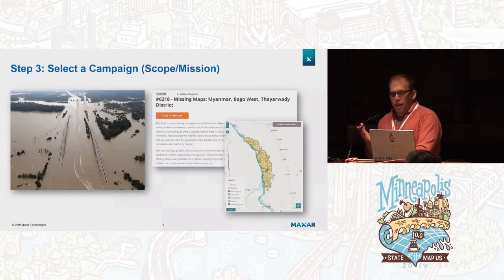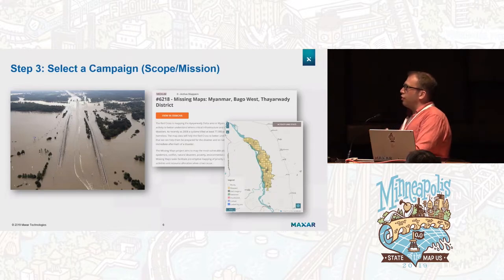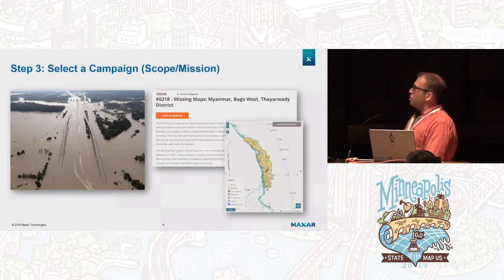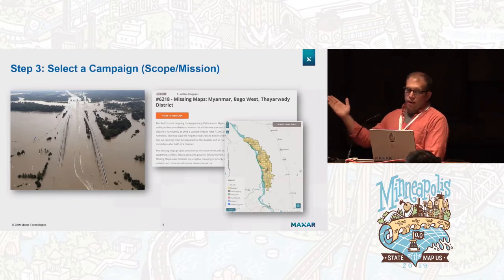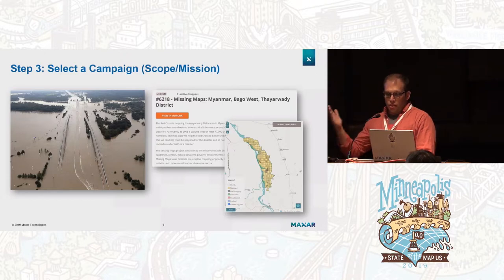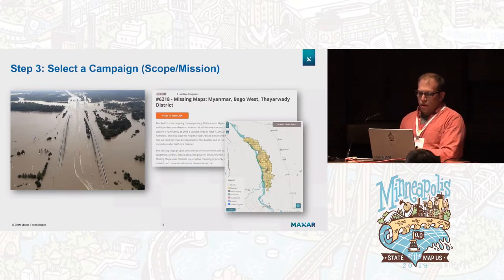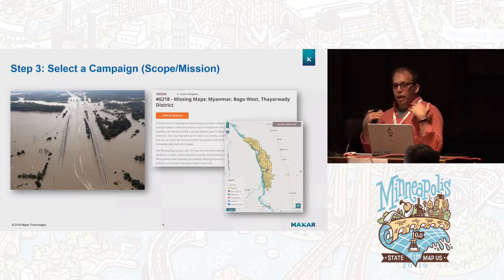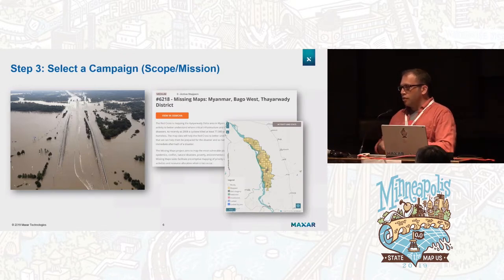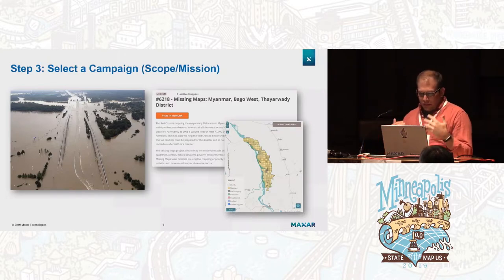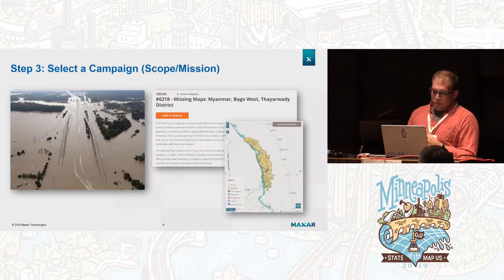Thirdly, select a campaign with a specific scope and mission. The first mapping campaign we did — at that point we were Digital Globe or Radiant Solutions — was after Hurricane Harvey, to map houses in Houston impacted by the storm. Most recently, just last month, we did a series of campaigns in HOT, coordinating with that team. This one was in Myanmar — about five different campaigns. We wanted to have that mission and scope, giving people a reason to participate and feel they're contributing to something important.